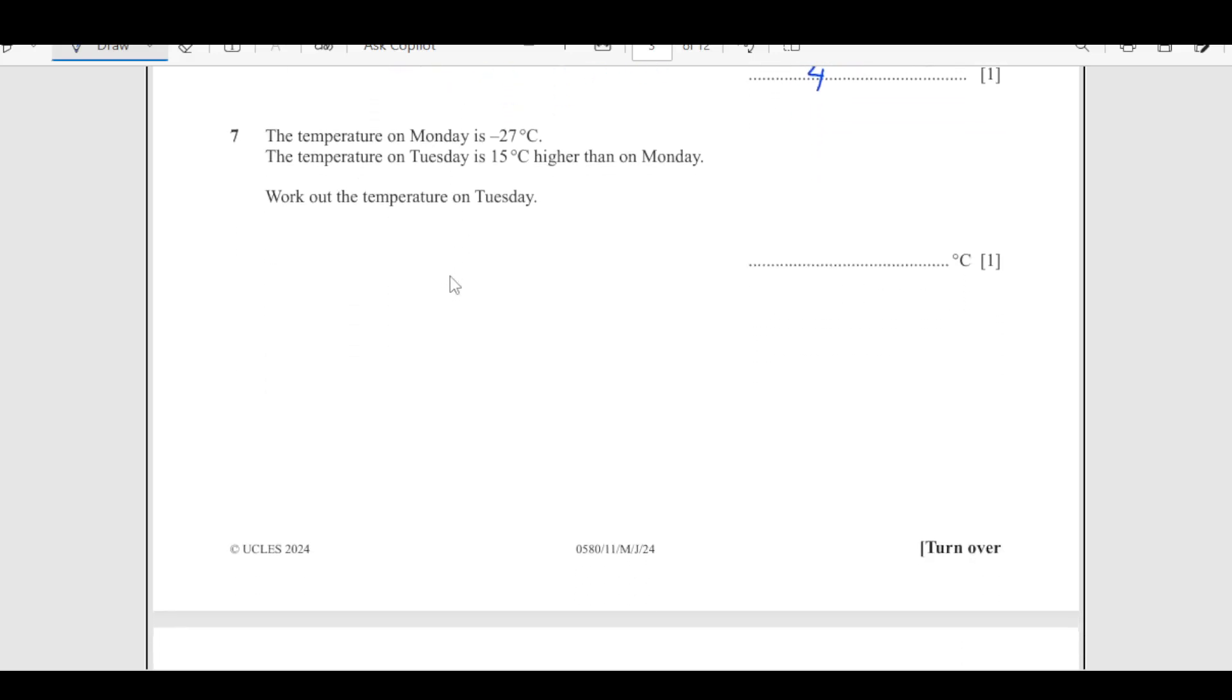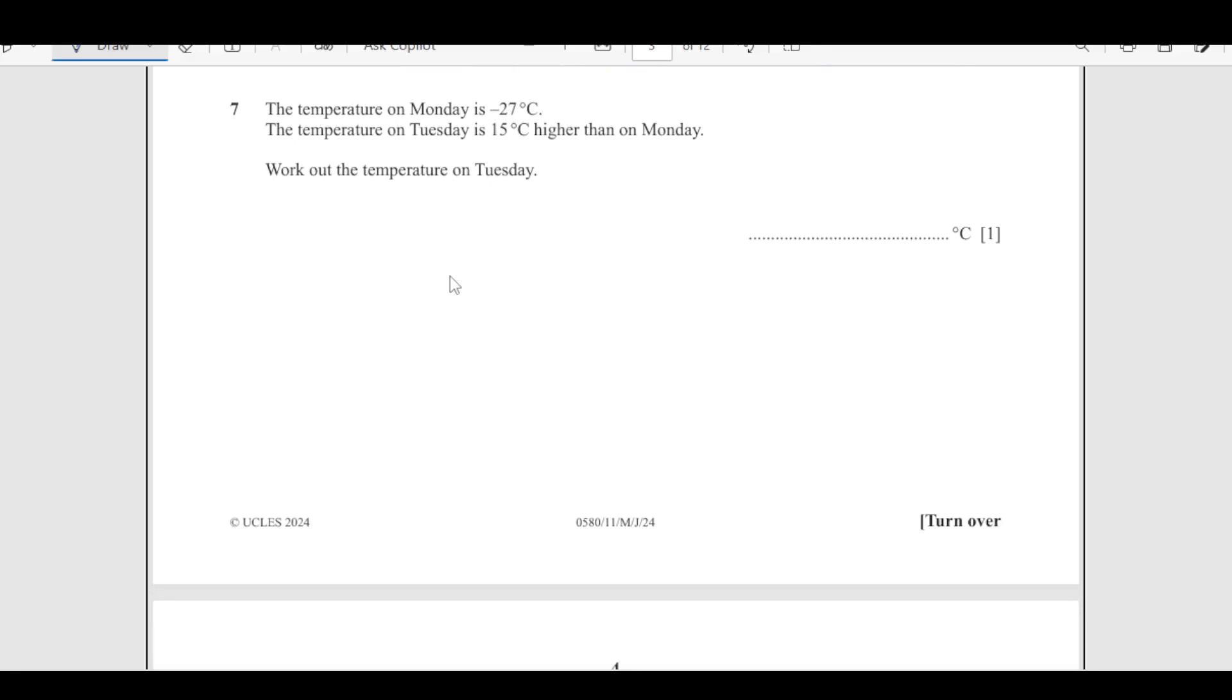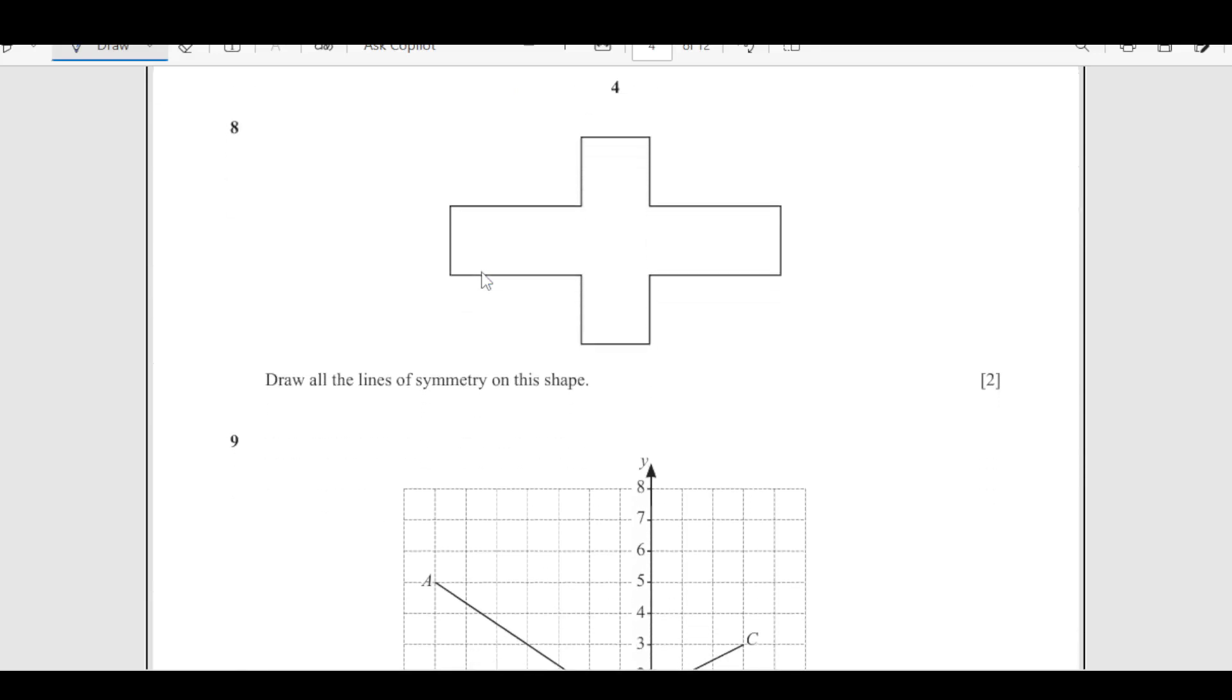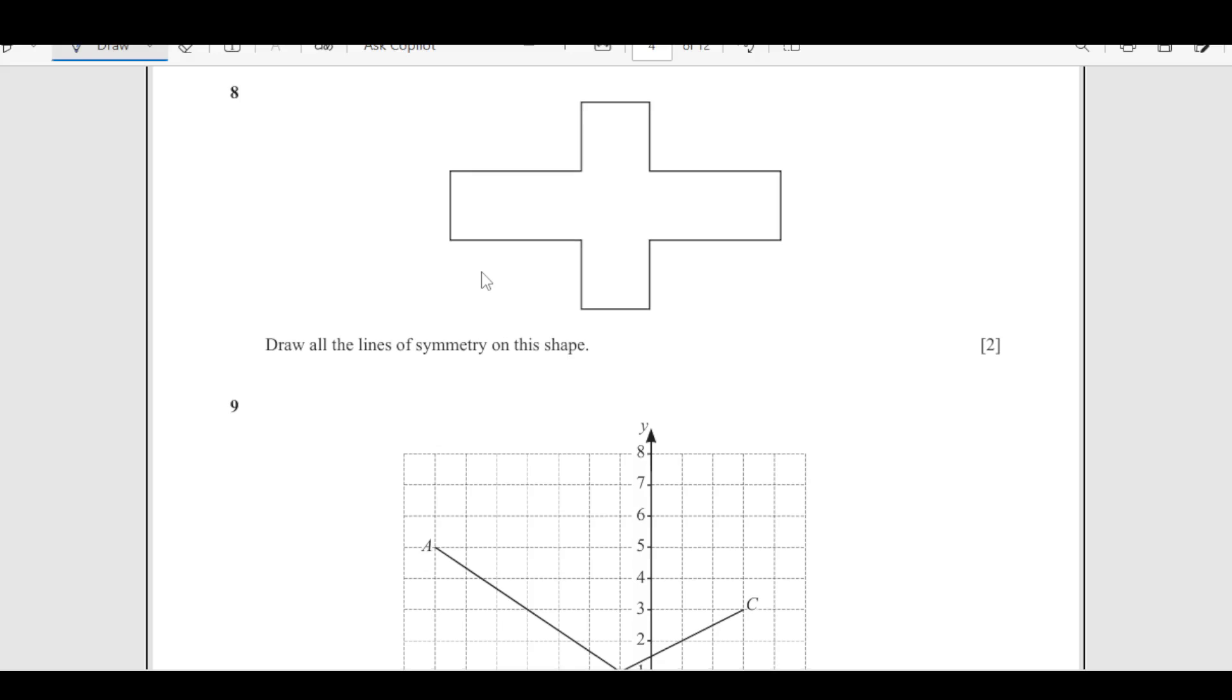Number 7: the temperature on Monday is negative 27 degree Celsius. The temperature on Tuesday is 15 degree higher than on Monday. Work out the temperature on Tuesday. Temperature on Tuesday: Monday was 27 degree Celsius and this is higher means increased by 15. Just subtract it. This is negative 27, which is greater than 15. So negative 12 degree Celsius. I hope you guys are getting everything. Kindly subscribe to the channel and share it with your friends if you are getting any benefit of these videos. Kindly support guys. It motivates to make more videos that are useful for you guys.